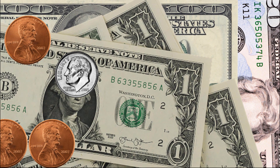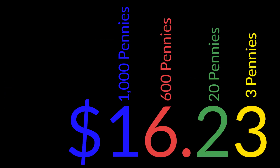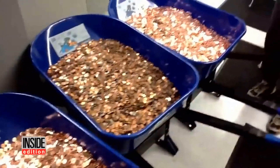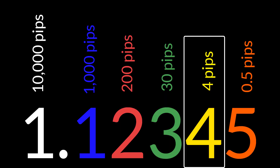Think about when you want to buy something for $124.13. Intuitively we know the 1 means a $100 bill and the 2 means a $20 bill. If you wanted to pay the whole thing in pennies, you'd need 12,413 pennies. Forex works exactly the same way — their penny is called a pip. A pip is the fourth digit after the decimal place.